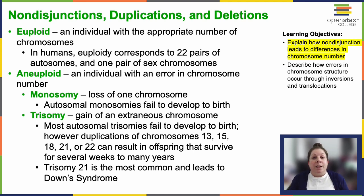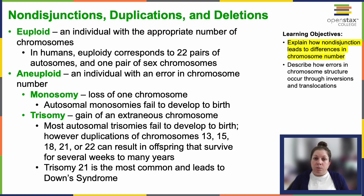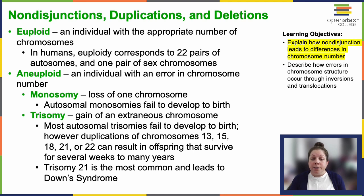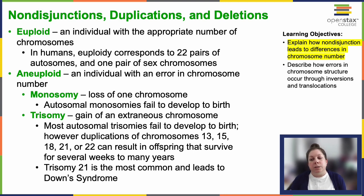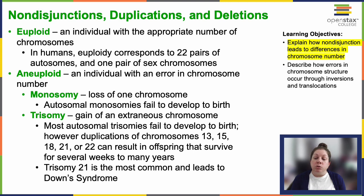Errors in chromosome number make someone aneuploid — 'AN' meaning without, so without the right number of chromosomes. This covers monosomy, which is the loss of one chromosome, or trisomy, which is an extra chromosome. Monosomy leads to non-viable zygotes because too many essential genes are lost. While most autosomal trisomies also don't reach birth, some do. Trisomic individuals experience a gene dose imbalance, producing excess amounts of proteins associated with genes on their extra chromosome, because cells are only calibrated for two copies of each gene.